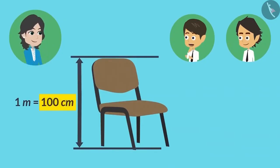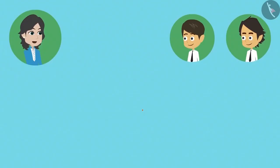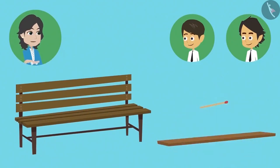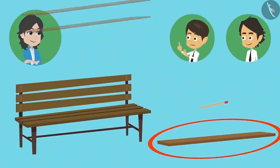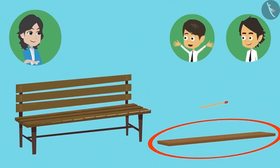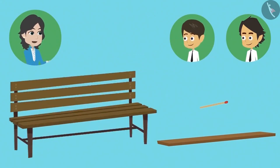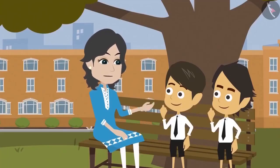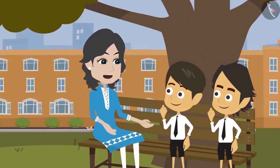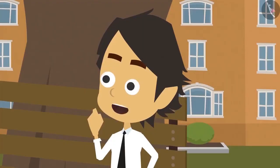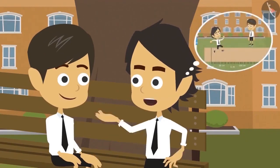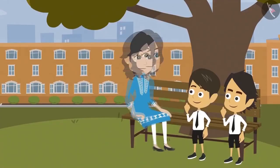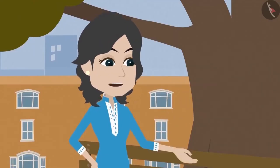The coach illustrates with a bench: she asks whether to measure it with a small matchstick or a big stick. A boy chooses the big stick because it's quicker and more practical. Similarly, meter is used to measure long things and centimeter for small things. Since a long jump will definitely be longer than 100 centimeters, it's easier and more practical to measure it in meters.